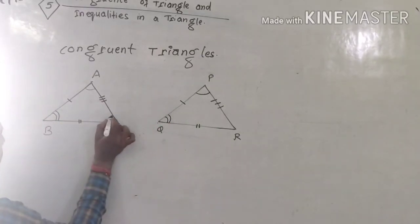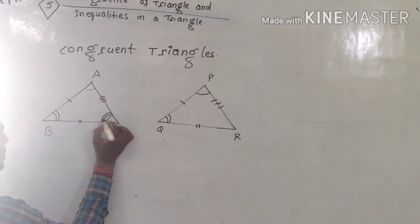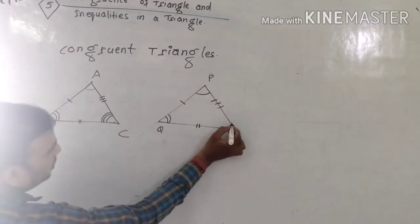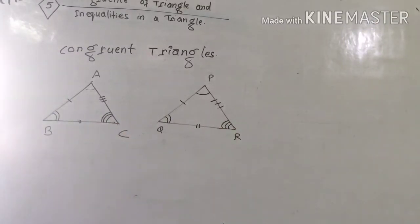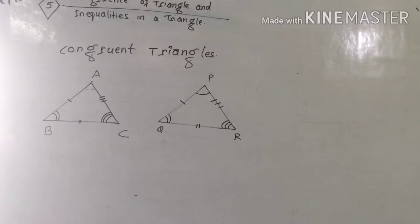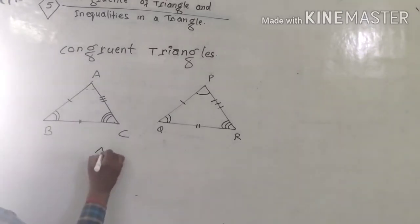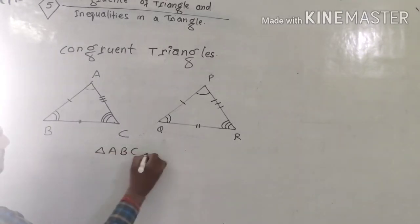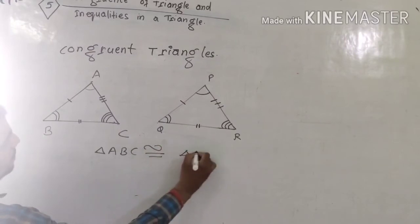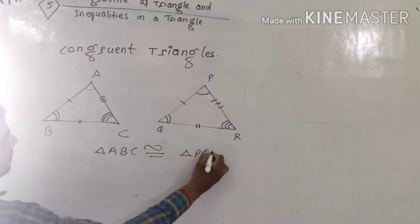And angle C is the corresponding angle of angle R. If triangle ABC and triangle PQR overlap, we write triangle ABC is congruent to triangle PQR.